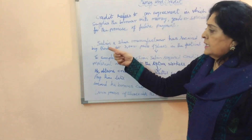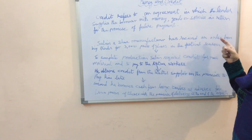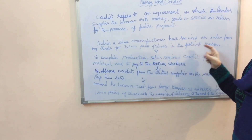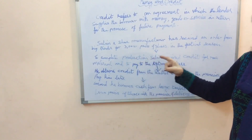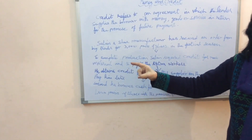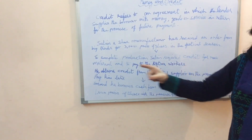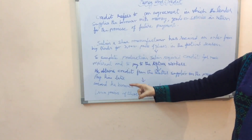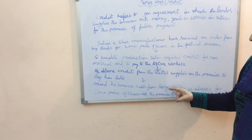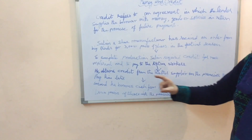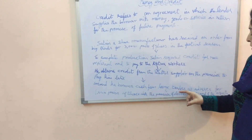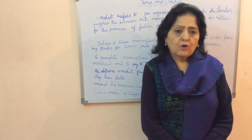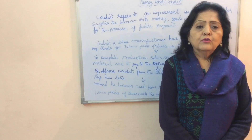We will understand this through an example. Salim, a shoe manufacturer, has received an order from a big trader for 3,000 pairs of shoes in the festival season. To complete production, Salim requires credit for raw material and to pay extra workers. He obtains credit from the leather supplier on the promise of future payment, and also borrows an advance from the large trader for a thousand shoes, with a promise of delivery at end of the month.